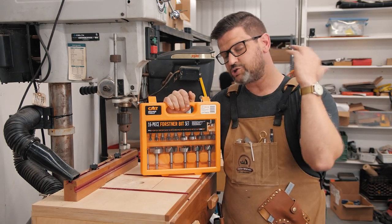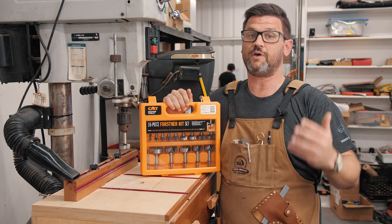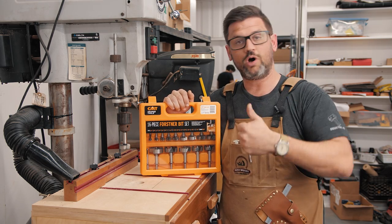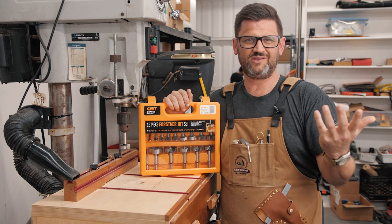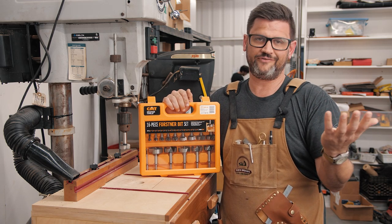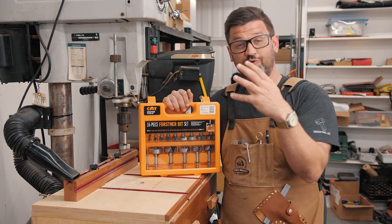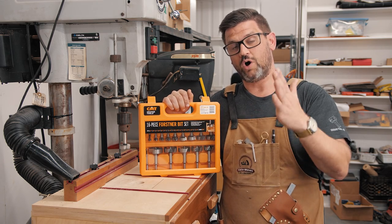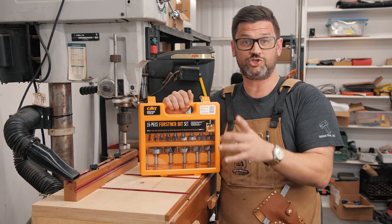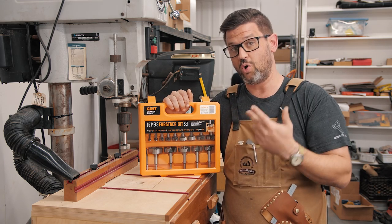To summarize, Forstner bits are the woodworker's bits. And if you're not using them, I think you should. They're high quality, very round holes. I've heard that drill bits don't even make round holes. I don't know if that's an urban myth or not. Comment down below if you know the truth on that. But Forstner bits are the way to go if you're doing quality woodworking. They're great for clearing waste or having finished, ready, flat bottom, or through holes.